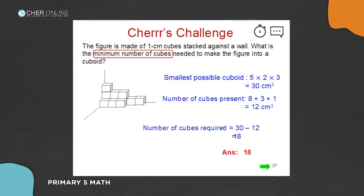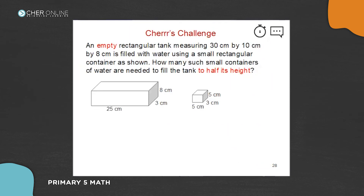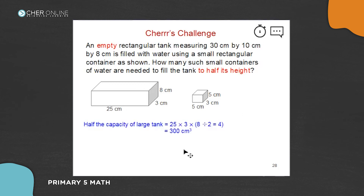Next problem: an empty rectangular tank measuring 30 centimeters by 10 centimeters by 8 centimeters is filled with water using a small rectangular container as shown. How many of such containers of water are needed to fill the tank to half the height only? To find this, we find the capacity of half the large tank, which is 35 times 3 times 4.